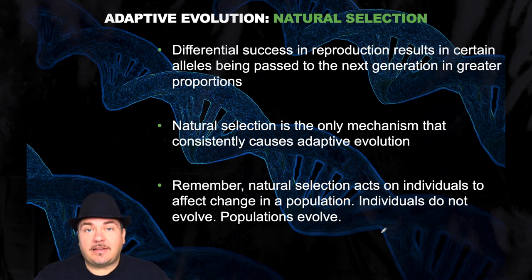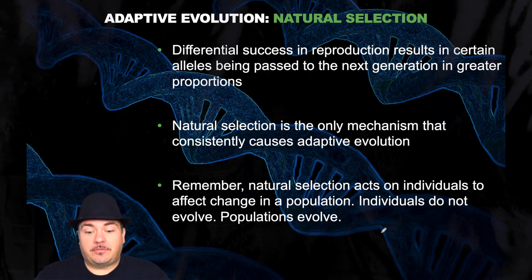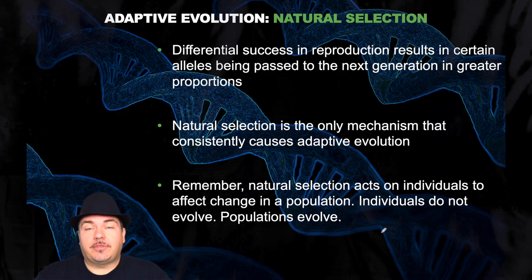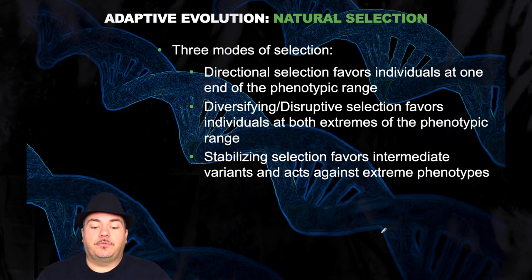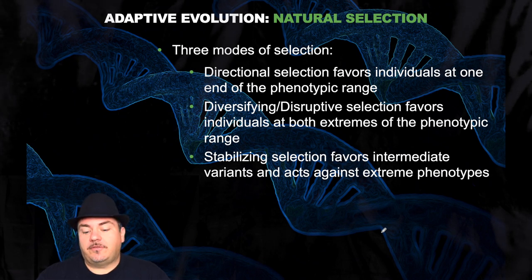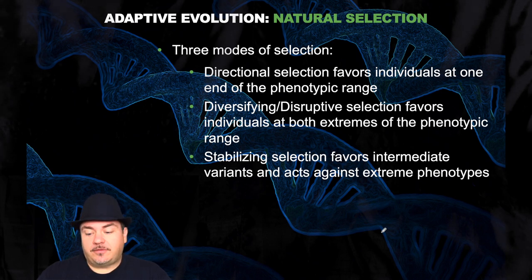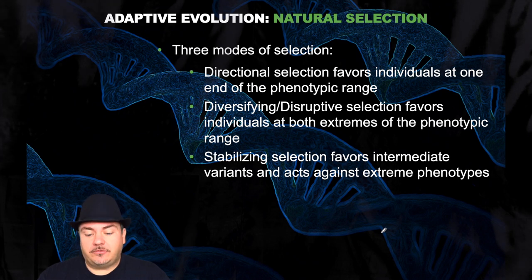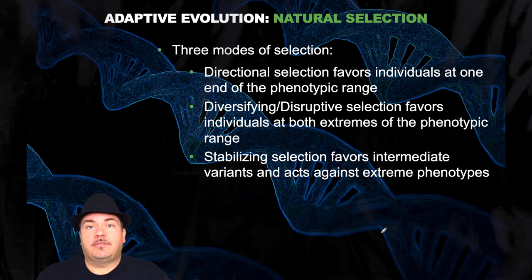Remember that natural selection acts on individuals to affect change in a population. An individual does not evolve — one rabbit doesn't decide it should have brown fur because it better matches its environment. Natural selection acts upon that individual, but the population is what's evolving. There are three modes of natural selection: directional selection, which favors individuals at one end of a phenotypic range; diversifying or disruptive selection, which favors individuals at both extremes of the phenotypic range; and stabilizing selection, which favors intermediate variants and acts against the extreme different phenotypes.